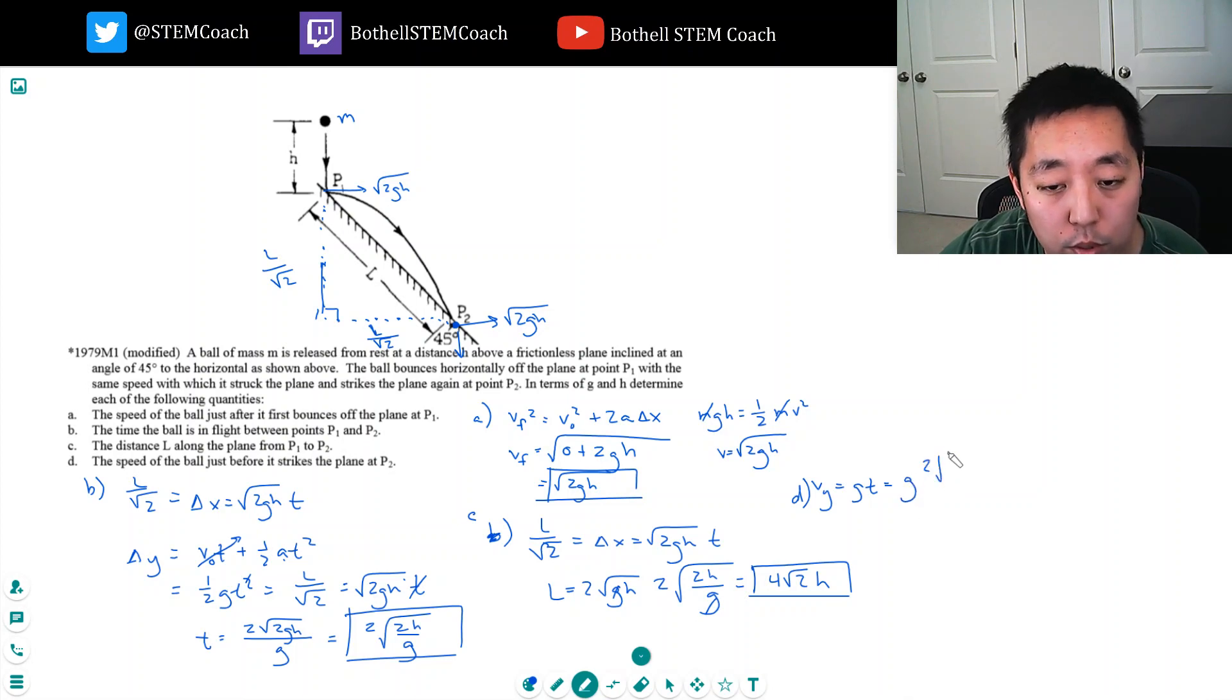So that would be g times two square root of 2h over g, or two root 2 square root of gh, because that g and that g, kind of this g in there, be g squared cancels with one. Okay, so that's its vertical velocity.